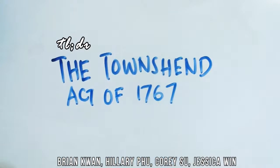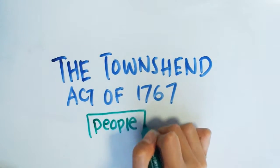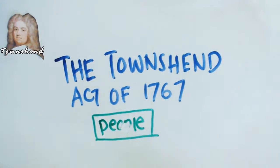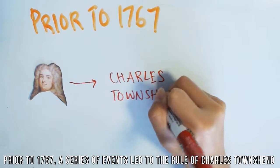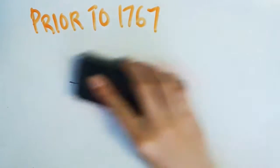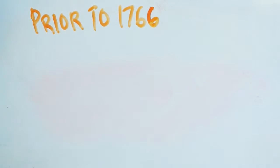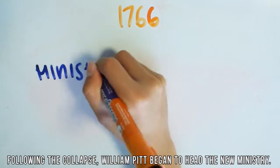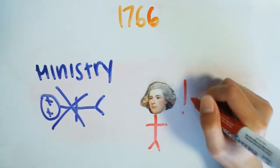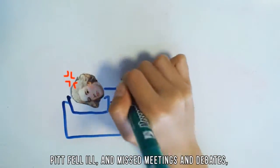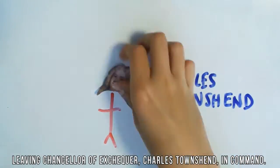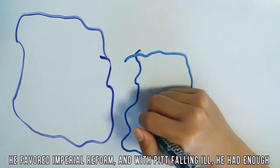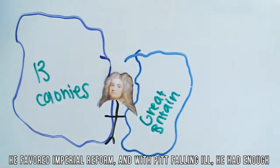The Townsend Act of 1767. Prior to 1767, a series of events led to the rule of Charles Townsend and the eventual creation of the Townsend Act. Following the collapse, William Pitt began to head the new ministry. Pitt fell ill and missed meetings and debates, leaving Chancellor of the Exchequer Charles Townsend in command. He favored imperial reform, and with Pitt falling ill, he had enough power to push it through to Parliament.